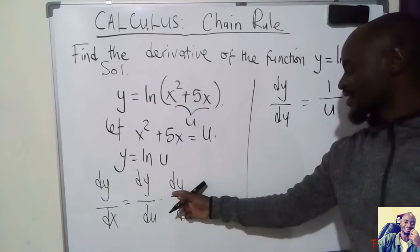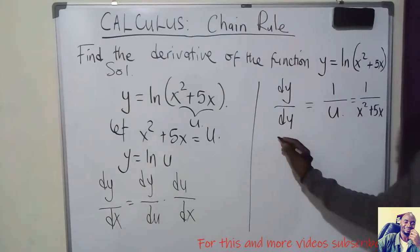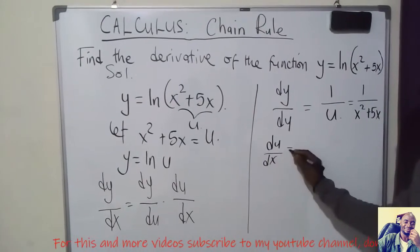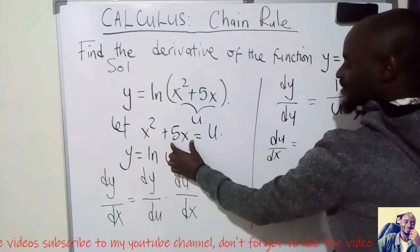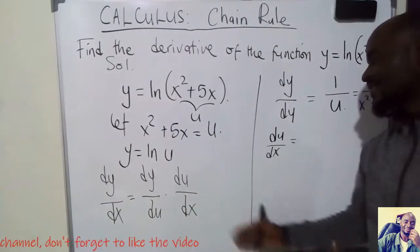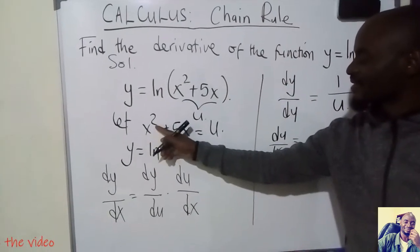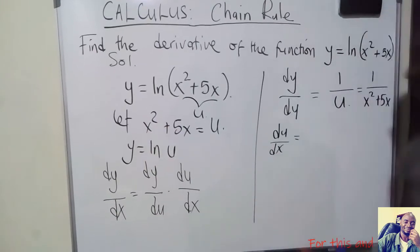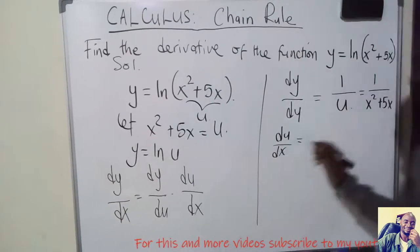The next thing we need to do is differentiate u with respect to x. We know that u = x² + 5x, so du/dx equals the derivative of x² plus the derivative of 5x. Using the power rule — multiply the power by the coefficient and reduce the power by 1 — the power on x² is 2 and the coefficient is 1, giving 2 × 1 = 2.